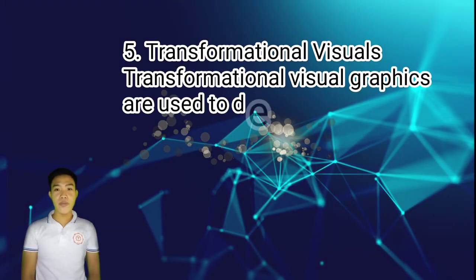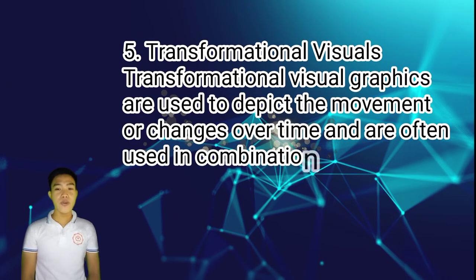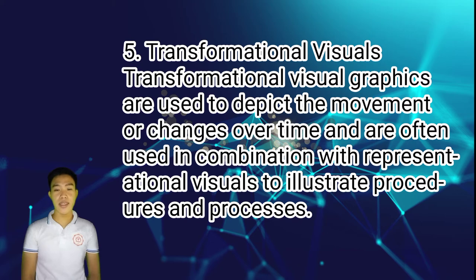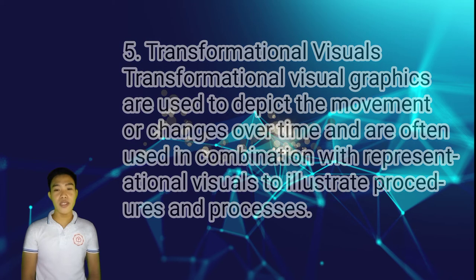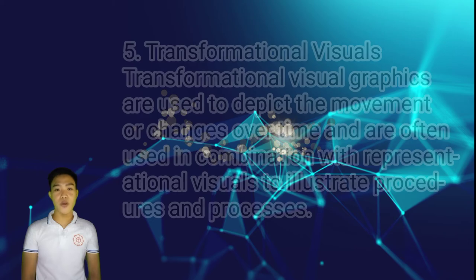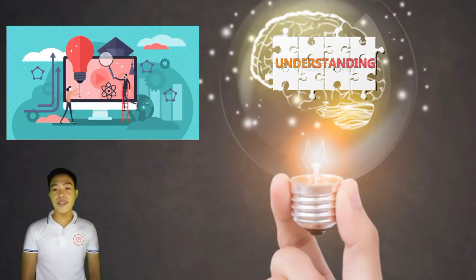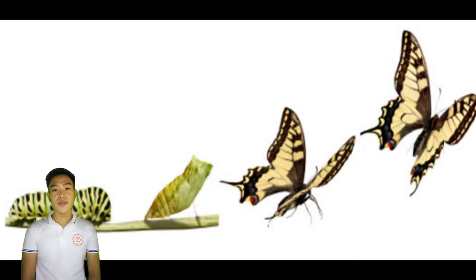Number five is transformational visuals. Transformational visual graphics are used to depict movement or changes over time, and are often used in combination with representational visuals to illustrate procedures and processes. In other words, transformational visuals encompass the type of learning visuals that depict process, motions, or transformations. Take a look at this example — it's a transformational visual that presents the life cycle of a butterfly.